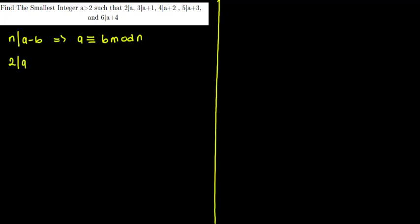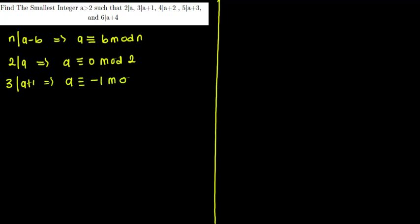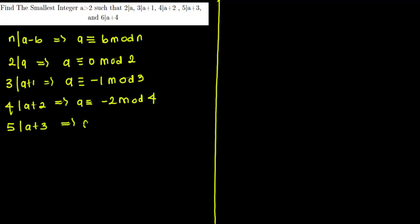Using that rule: 2 divides a implies a ≡ 0 (mod 2); 3 divides a+1 implies a ≡ −1 (mod 3); 4 divides a+2 implies a ≡ −2 (mod 4); 5 divides a+3 implies a ≡ −3 (mod 5); and 6 divides a+4 implies a ≡ −4 (mod 6).